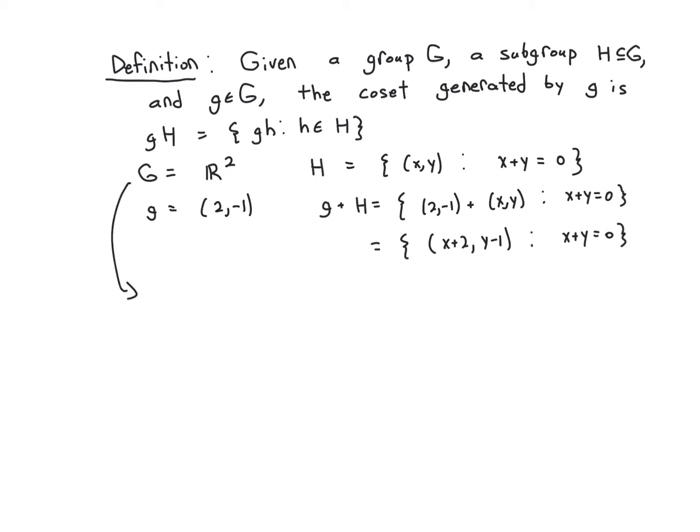It is worth pointing out that it's good old-fashioned vector addition. Now let g be the vector (2, -1), then our coset, since we're working with addition, I'm going to write addition here. The coset g plus H, by definition, is the sum of things of the form (2, -1) and (x, y), where (x, y) is an h, which means x plus y equals 0. So in other words, it's all expressions of the form (x + 2, y - 1), where x plus y equals 0.